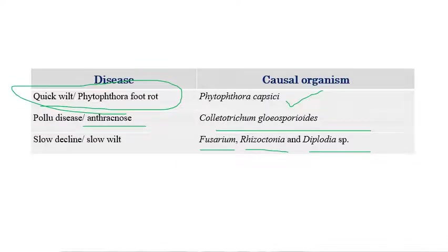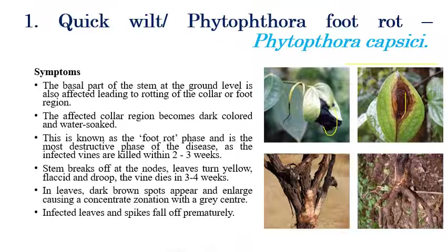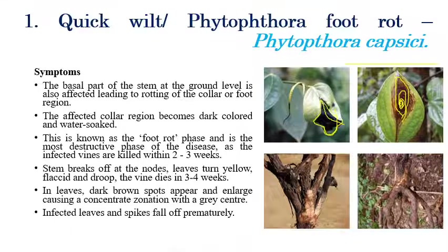The first disease is quick wilt or Phytophthora foot rot, caused by Phytophthora capsici. In the leaves, initially small dark brown spots appear. Later these spots enlarge and concentric zonation of rings can be seen.